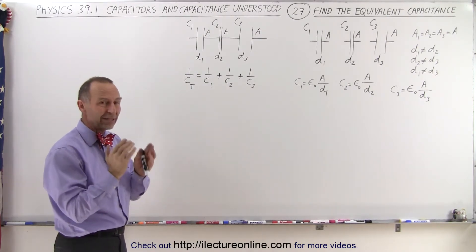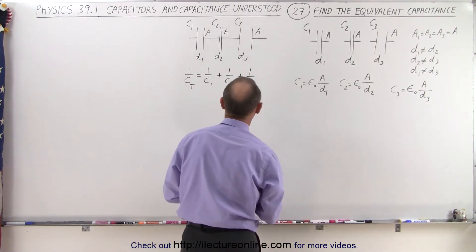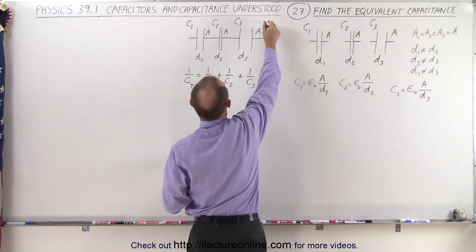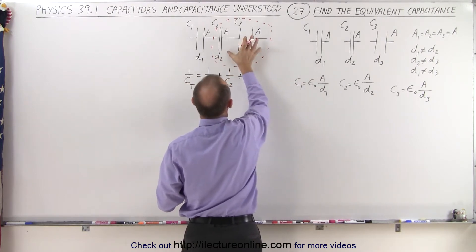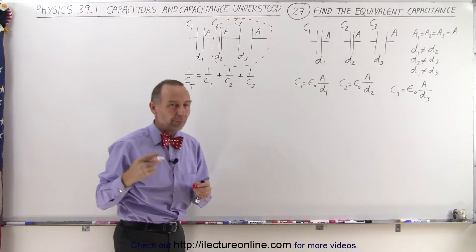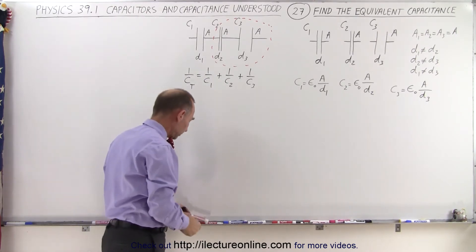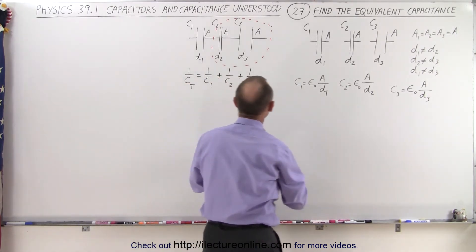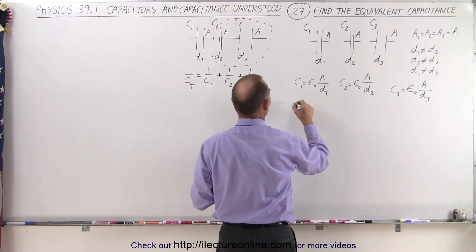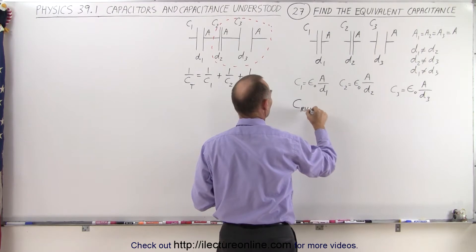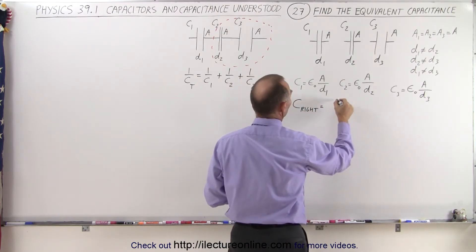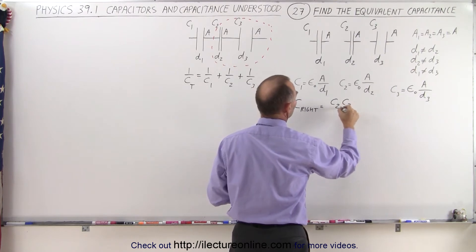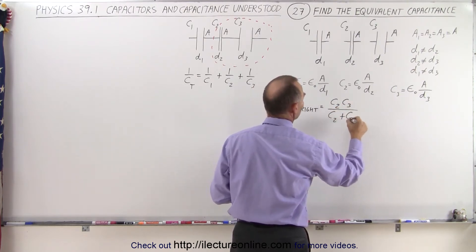Sometimes it's easier to take them two at a time. So what I'm going to do is first combine two capacitors into one, and then add it to the third one. That way I can use the product-over-the-sum rule. So I'm going to take the sum — let's call that C on the right side of the circuit — and that can be said to be equal to the product C2 times C3, divided by C2 plus C3.